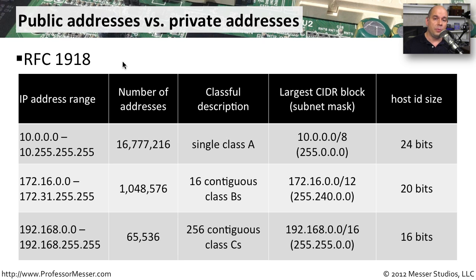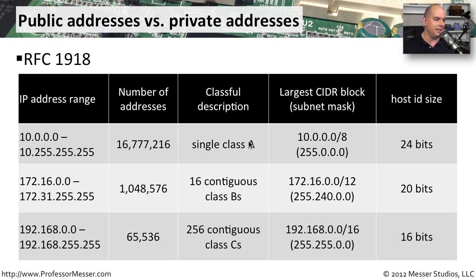When designing your own private address space, you can choose from three different groups. The first is the address range 10.0.0.0 through 10.255.255.255 — colloquially called the 10 network. In the old class-based system, you can think of this as a single class A. The largest block has a slash 8 with a subnet of 255.0.0.0, and you can subnet anything below that — slash 16, slash 24, slash 26 — you have complete flexibility. It's very common to see the 10 network used in very large organizations.